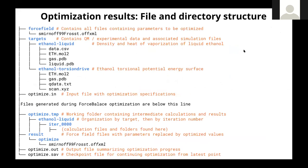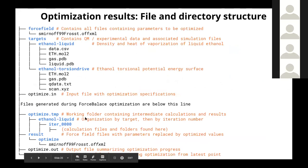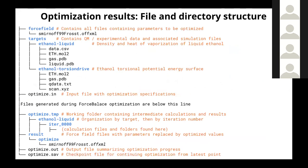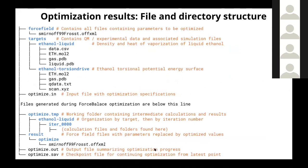ForceBalance produces an output folder containing all intermediate calculations and results. A subfolder called 'result' contains the force field with optimized parameter values. The output file contains all the graphical results, and there is a checkpoint file for restarting the optimization from where you left off—for example, if you want to add an extra target.